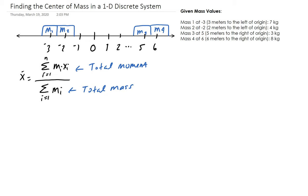You take the mass value at each point and multiply it with its respective distance from the origin, then do that for each point and take the sum of those values.